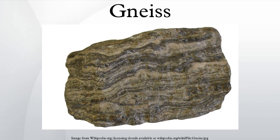Not all gneiss rocks have detectable banding, however. Kyanite gneiss crystals look like random clumps of kyanite in what is mainly a plagioclase matrix.